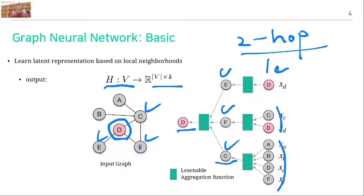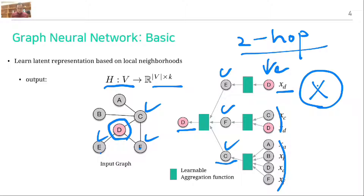At the first layer, we give the input representation using the attribute vector. It could be gender, religious view, location, or any feature matrix. We assume that all attribute information must be available before running — that is the precondition, particularly for GCN.